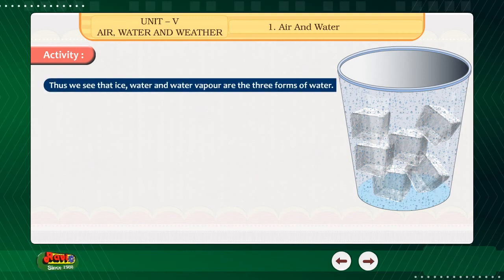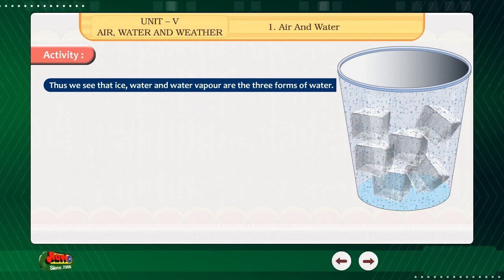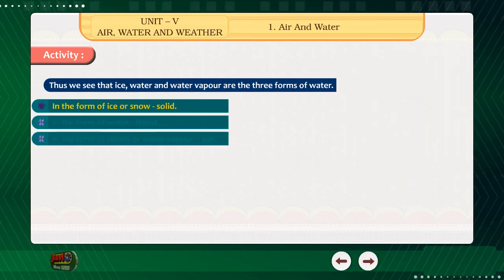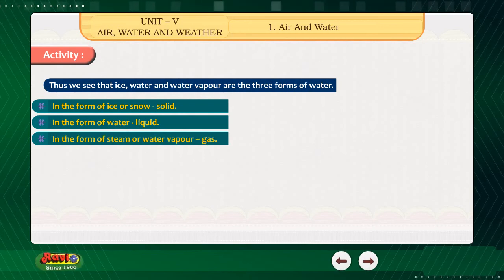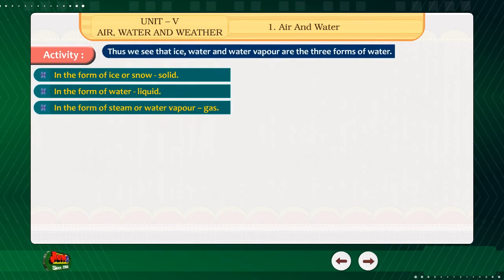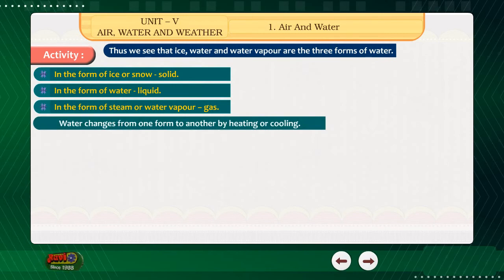Thus, we see that ice, water and water vapour are the three forms of water. In the form of ice or snow — solid. In the form of water — liquid. In the form of steam or water vapour — gas.